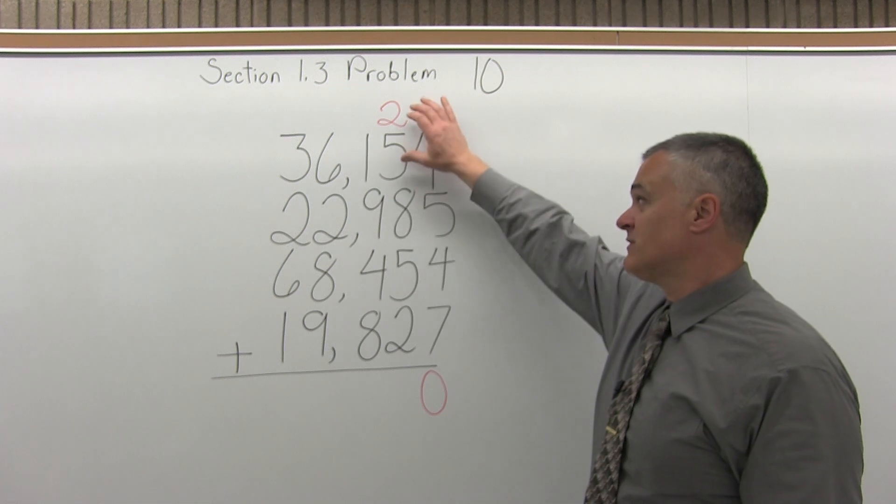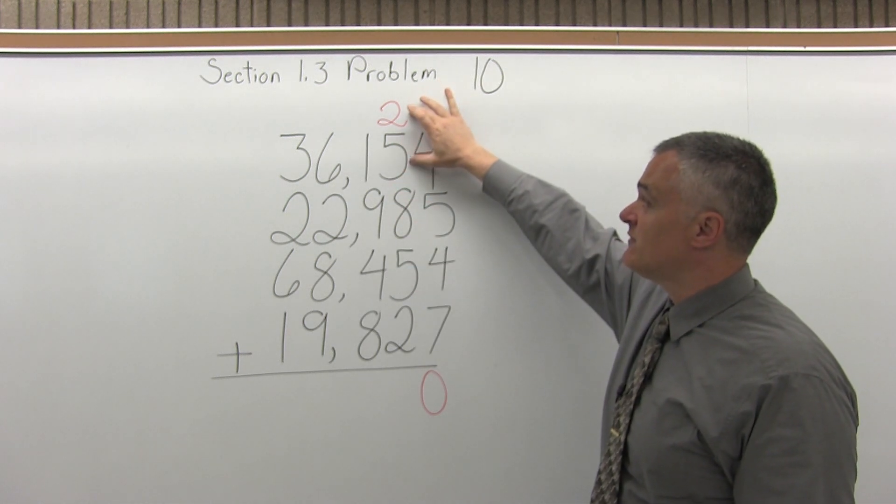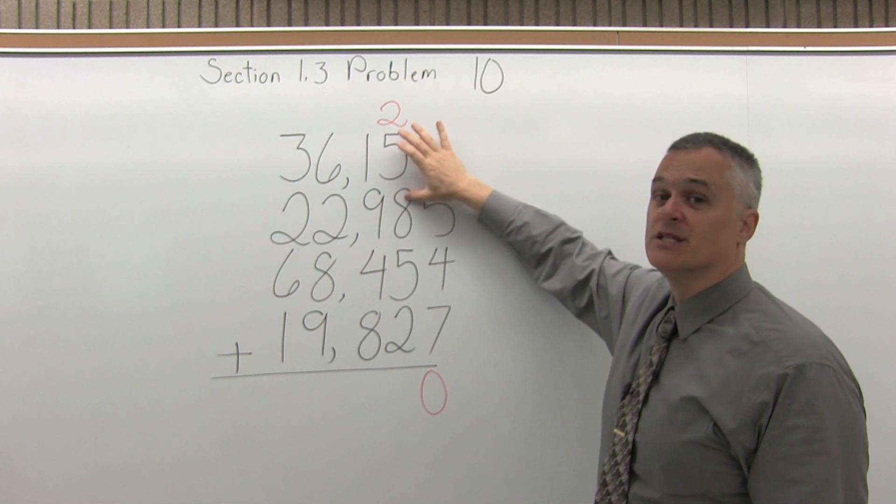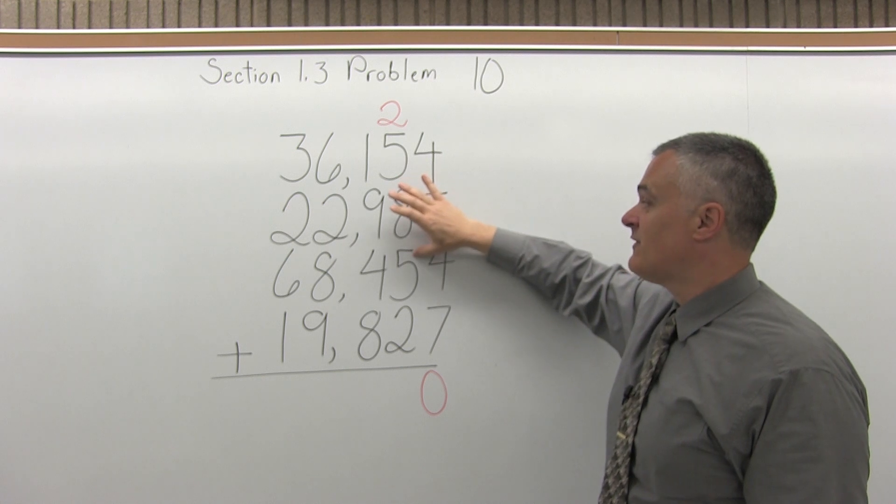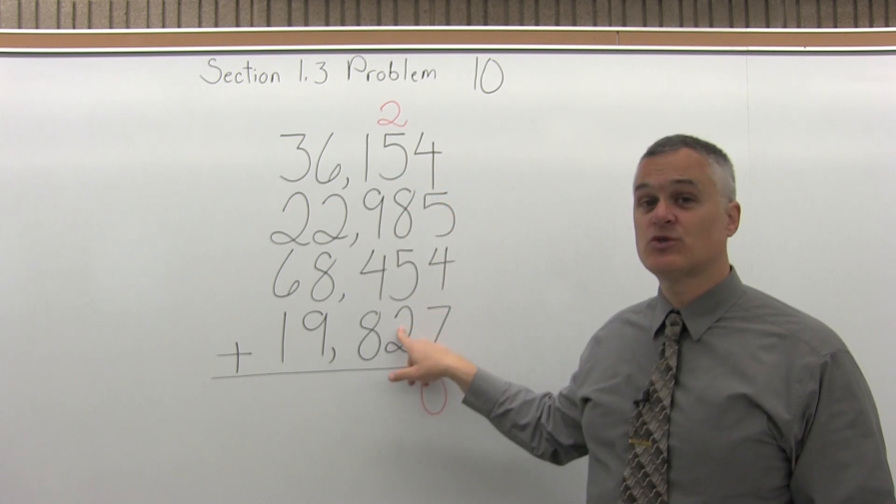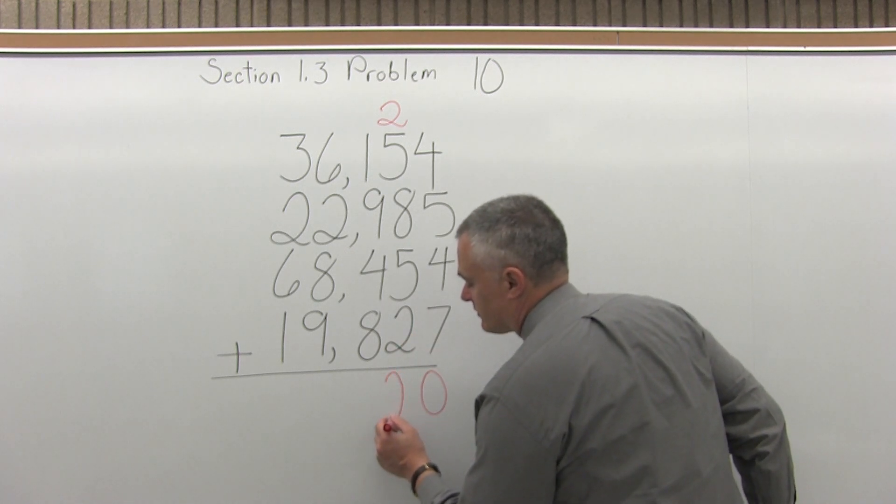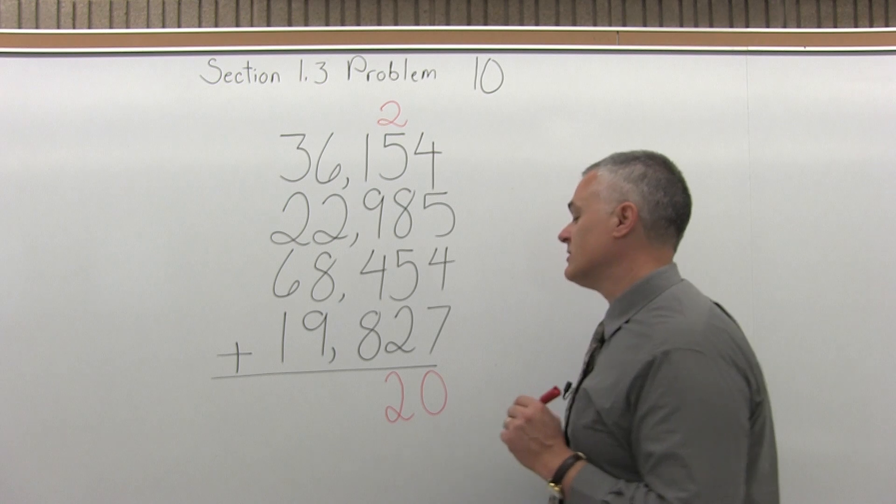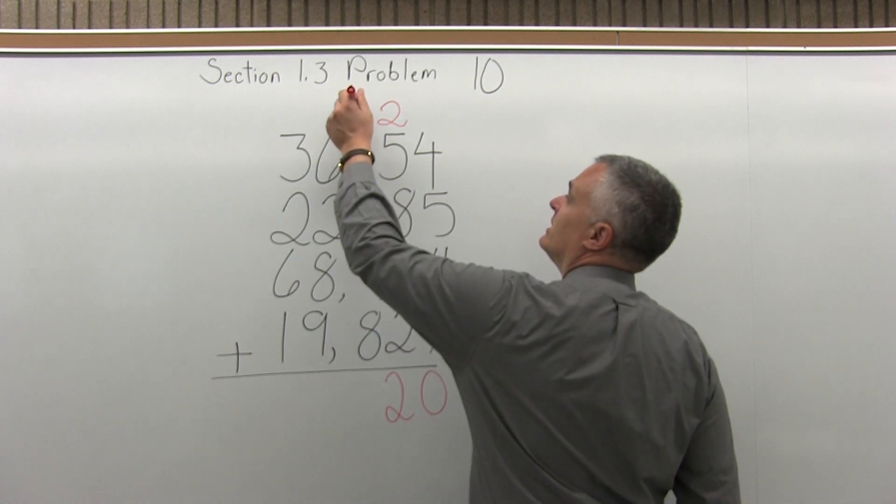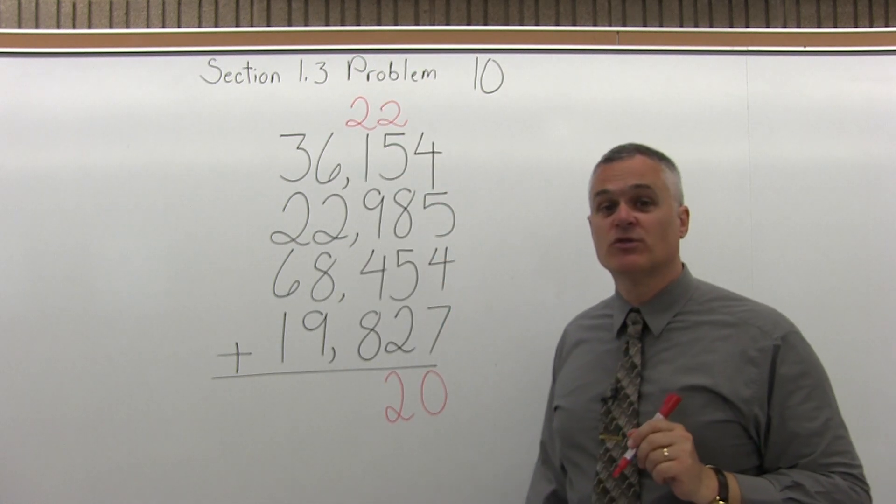So now I must add 2 plus 5 plus 8 plus 5 plus 2, that's the next column of digits. 2 plus 5 is 7, 7 plus 8 is 15, 15 plus 5 is 20, 20 plus 2 is 22. So now one of those 2s, the 2 from the right of the 22, goes under the column of digits that I just added. The other 2, the left half of the 22, is carried to the top of the next column of digits over to the left.